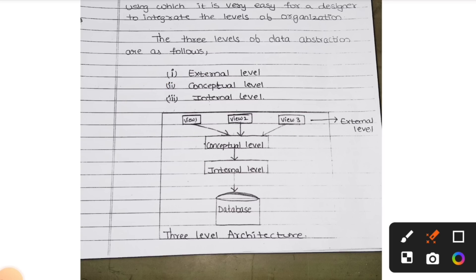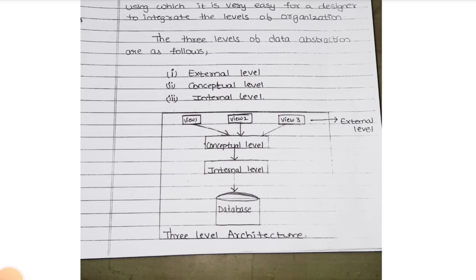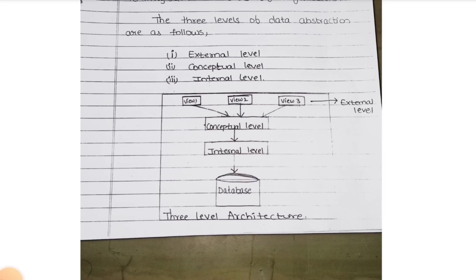Conceptual level is above the external level. For example, in your college database, they are having students' information, faculty information, fees, how much salary they are paying - everything is stored in the database. Will you be able to check your faculty's salary? No. We are able to check only our own information - about our fees, about our identity card, about our things only. That is the external level. Who will see the conceptual level? Non-management, non-teaching staff, accounting staff - they are the higher authorities rather than the external level, so they will see the conceptual level. That is the main database access to those people.